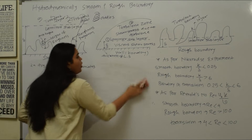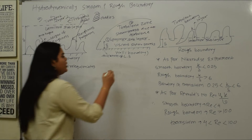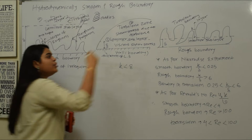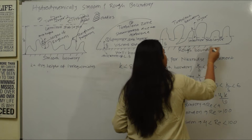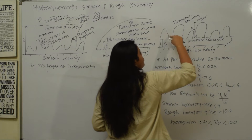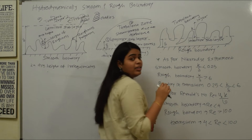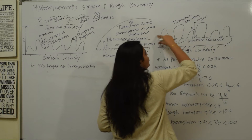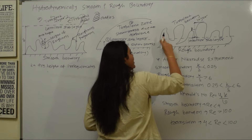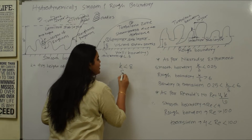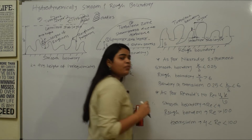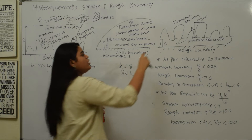Now for the hydrodynamically rough boundary. As we saw, for a smooth boundary K is less than delta. In the rough boundary case — for a pipe wall or boundary with turbulent flow — the thickness of the laminar sub-layer is much lower compared to the height of irregularity K. We call this a rough boundary.